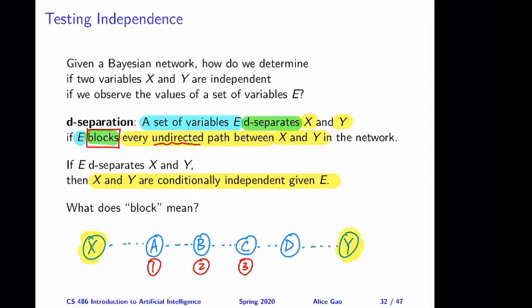Hello, everyone. This is Alice Gow. In the previous video, I introduced the concept of d-separation. This is a very powerful concept. Given any two variables x and y in the Bayesian network, we can use d-separation to test whether x and y are conditionally independent given that we observe a third set of variables e. In this video, let's look at a couple of examples where we apply this concept to determine some independence or conditional independence relationships.